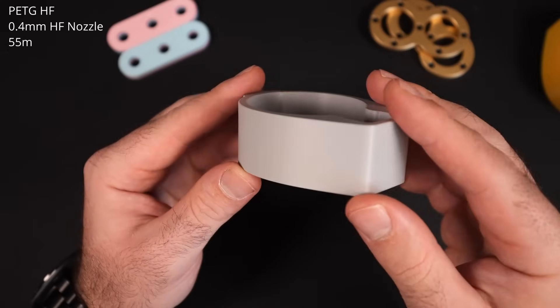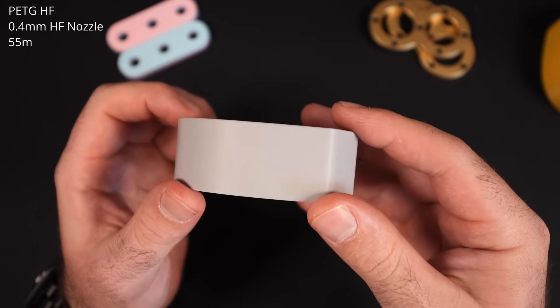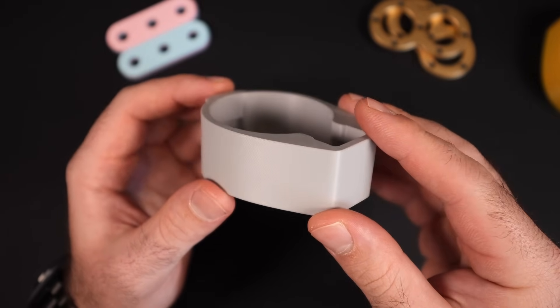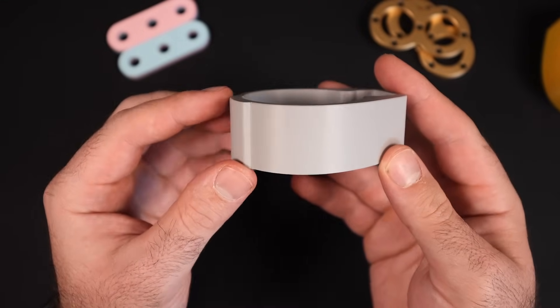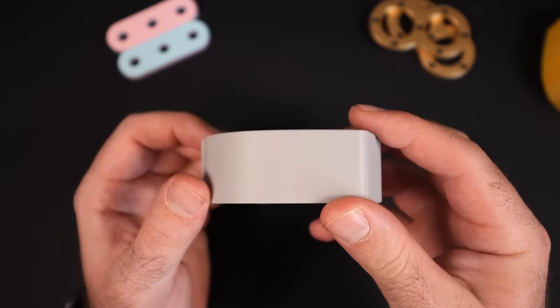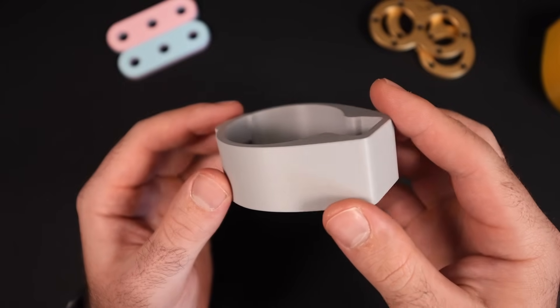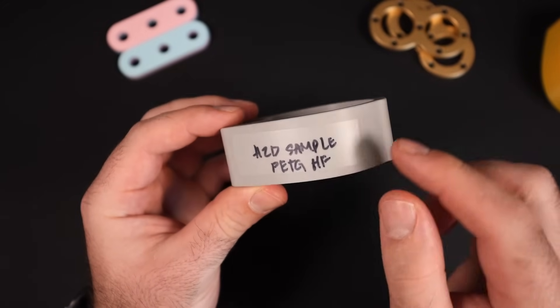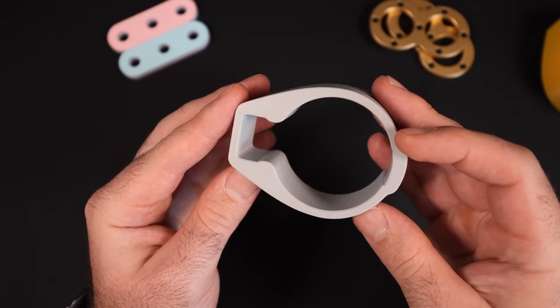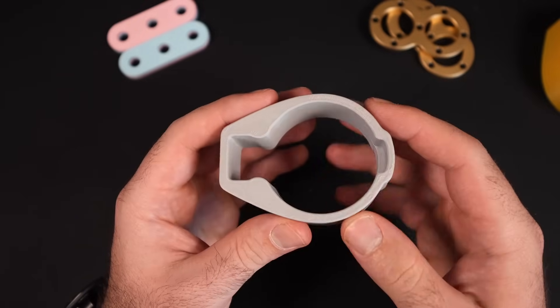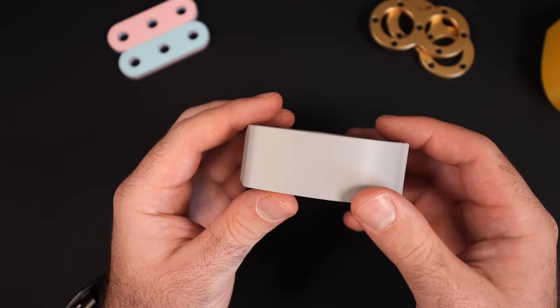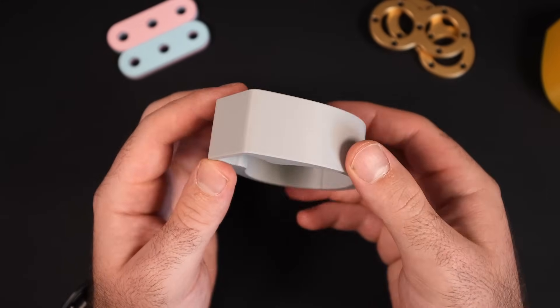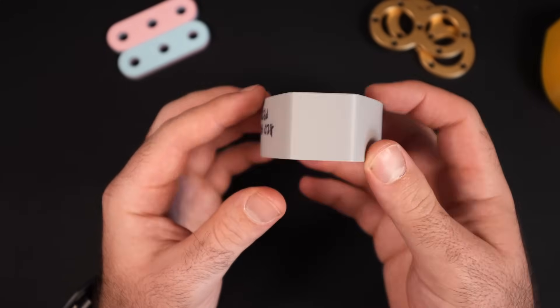Over here on the H2D print there are like no VFAs. I mean seriously there's hardly any VFAs if any at all on this surface. Look how nice that outer surface is. Super clean. This is PETG High Flow printed on the H2D. Perfect first layer. Top layer could be better, but overall amazing print. Definitely something that I can sell online and be proud of.